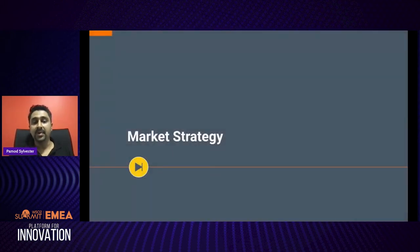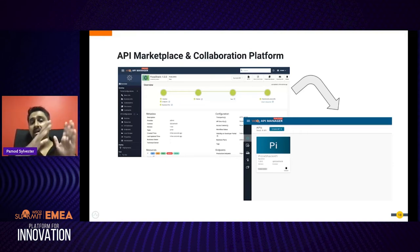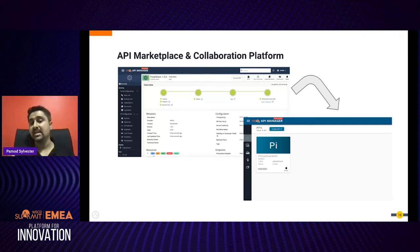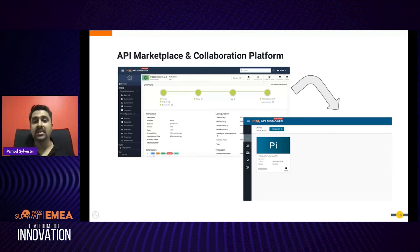When your product is ready for market, you need a collaborative platform that allows you to easily transition that product into a store where consumers can find the API and subscribe to it. This platform should seamlessly integrate with monetization and billing engines so that in no time you can generate that whole ecosystem and get the business running.